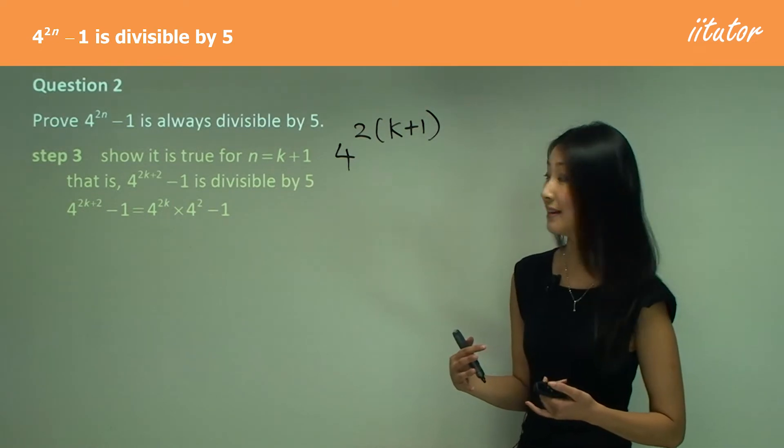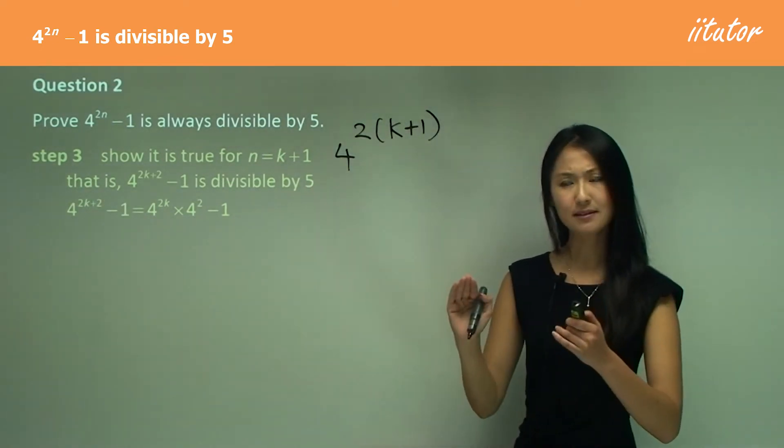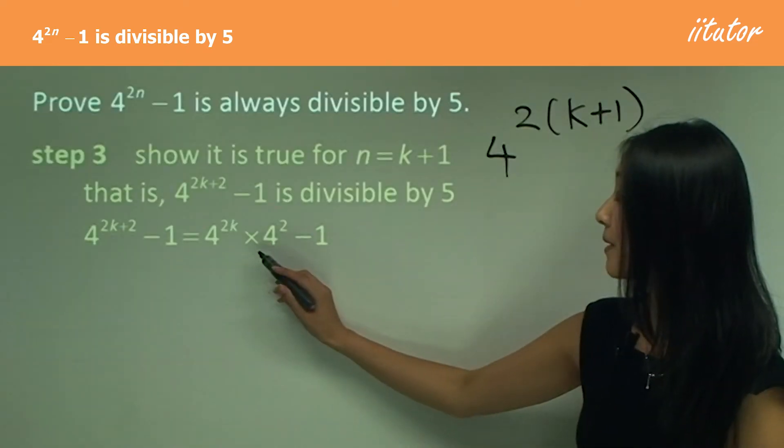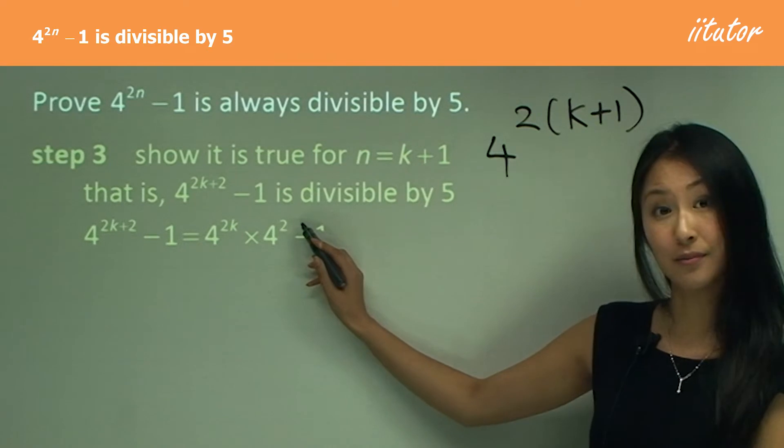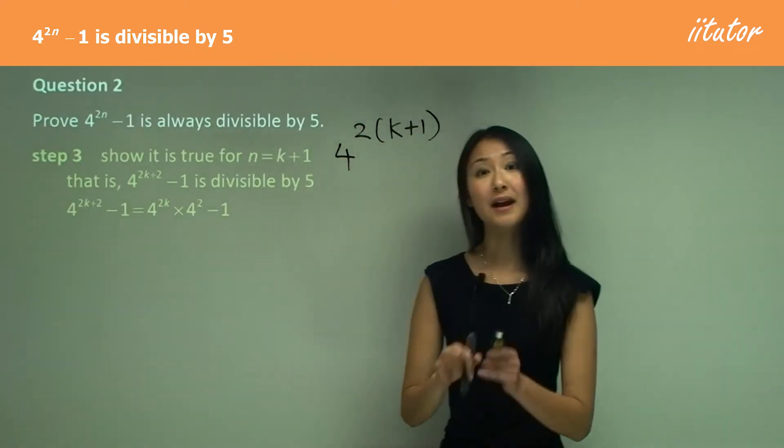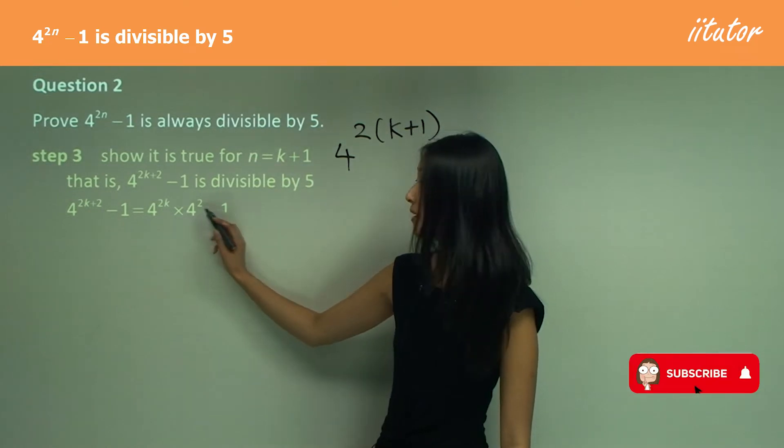The first thing we do with this is we always want to separate this index. If there's a plus there, we want to separate it. So we separate that into 4 to the power of 2k times 4 to the power of 2, right? Because if it's plus, then when I separate them it becomes multiplied between the bases, minus 1.